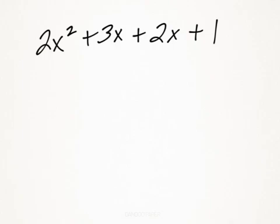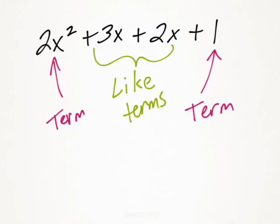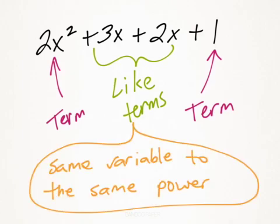In this example, you can see that you have four terms. Now two of these terms kind of stand alone. And the two in the center here are actually like terms. And what that means is they have the same variable to the same power. So they both have x as a variable, and they both have it to the same power, which for this example would be just to the first power, which we don't represent.